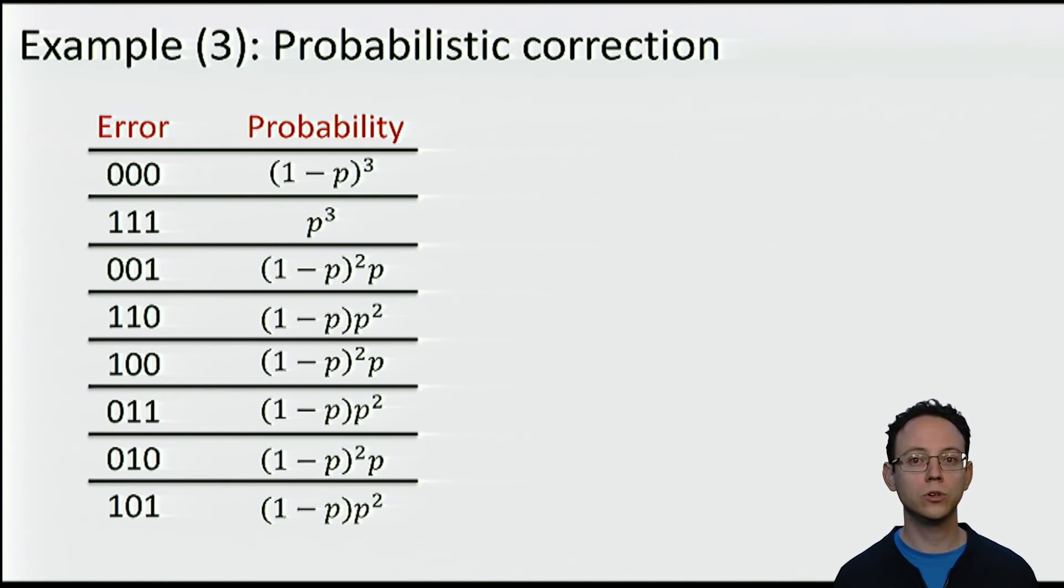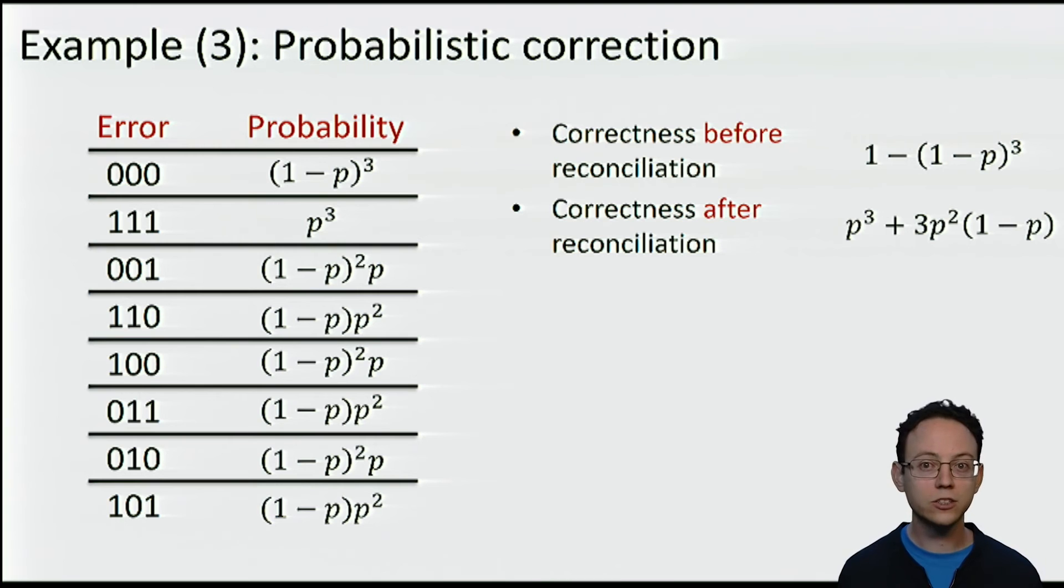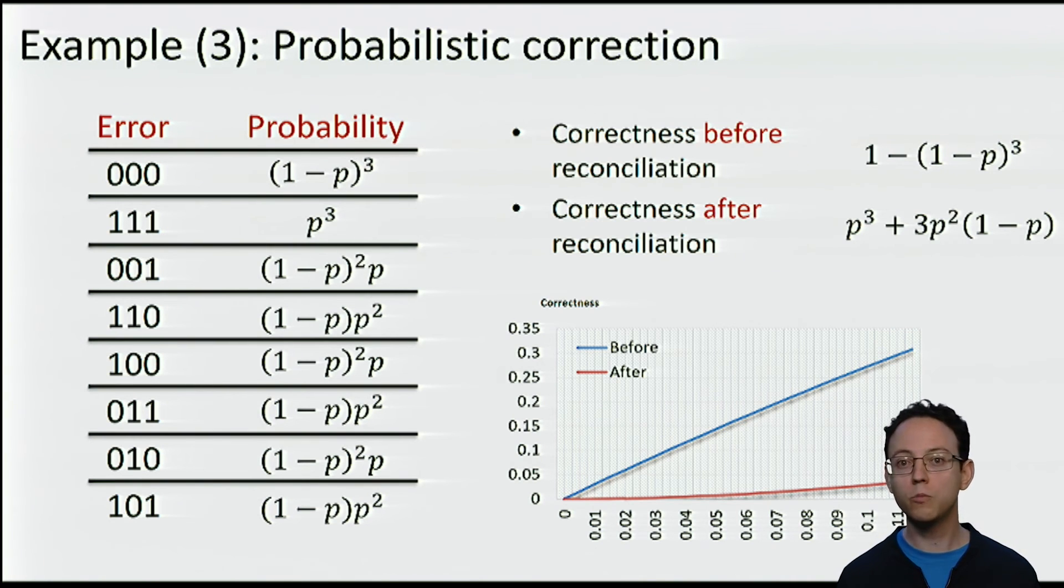Now, what happens if we do not do reconciliation? If Alice and Bob do not try to correct at all? Then what happens is that their strings are correct with probability (1-p) cubed. The correctness of this naive protocol is the complementary probability, that is 1 minus (1-p) cubed. And what happens if we do apply the very simple example that we have been exploring in the previous slides? Then we can correct all single error strings and we get that the correctness of the output strings is p cubed plus 3p squared times (1-p). So perhaps it is hard to immediately see the difference between both calculations. So here we have plotted the correctness of both settings. In blue, no reconciliation. In red, after we apply the example method. So we see that even though we have paid a price, that is we have sent a message of 2 bits from Alice to Bob, the probability that the string of Alice is different from the string of Bob has been greatly reduced.